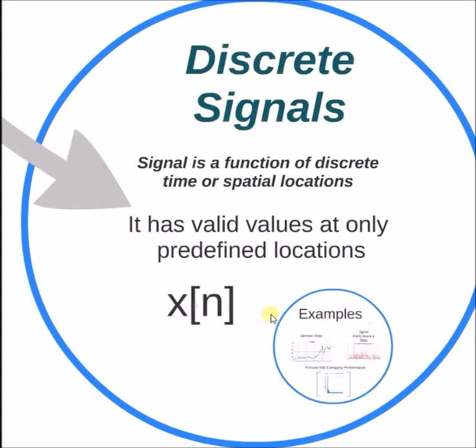Now let us look at the definition of discrete signal. This is a function of discrete time or spatial locations or any other chosen independent variable. It has valid values only at these chosen locations, whether in time, space, or any other variable. At all other locations, they are usually 0.